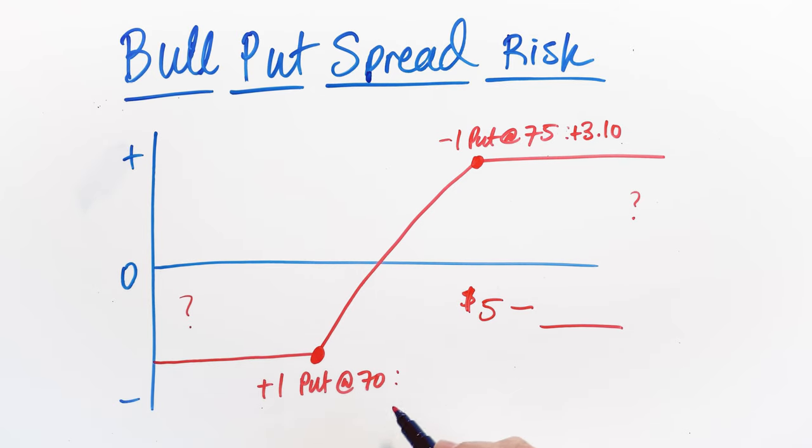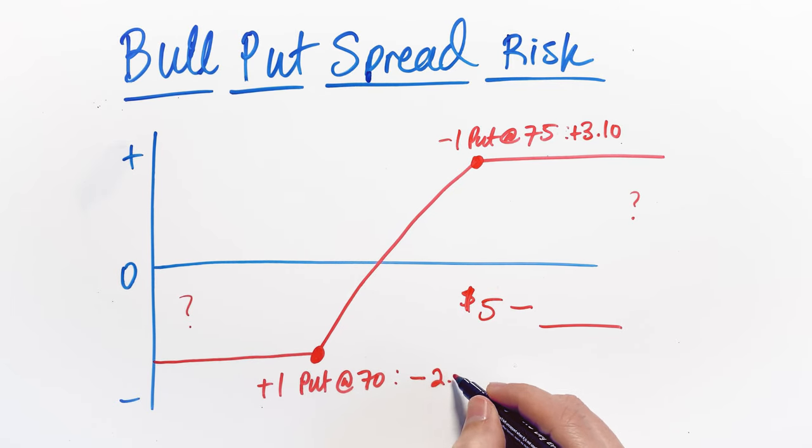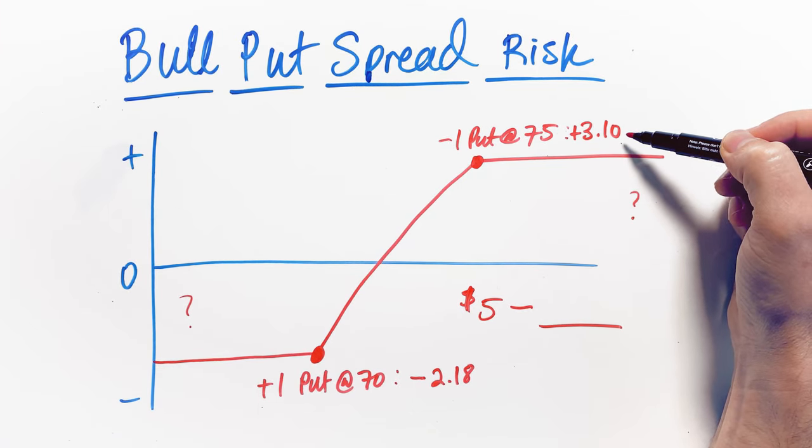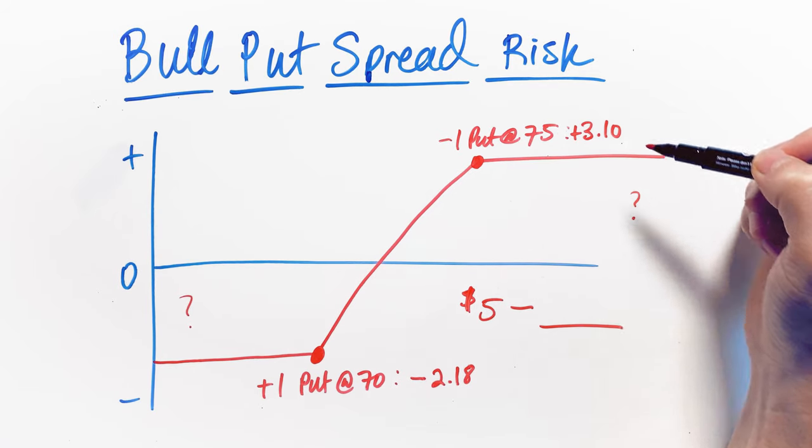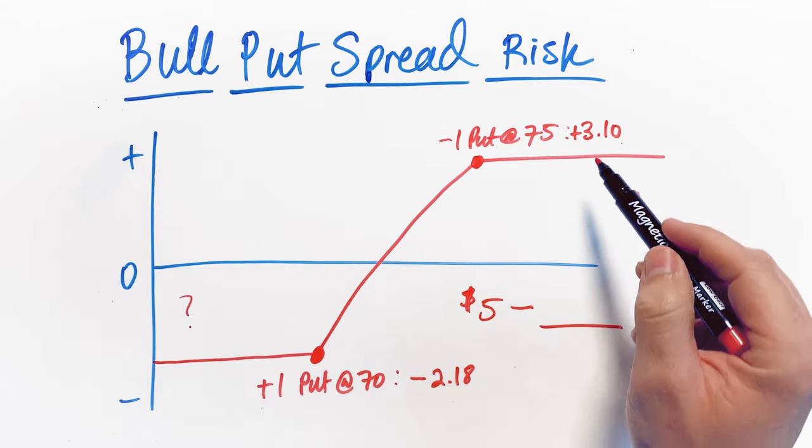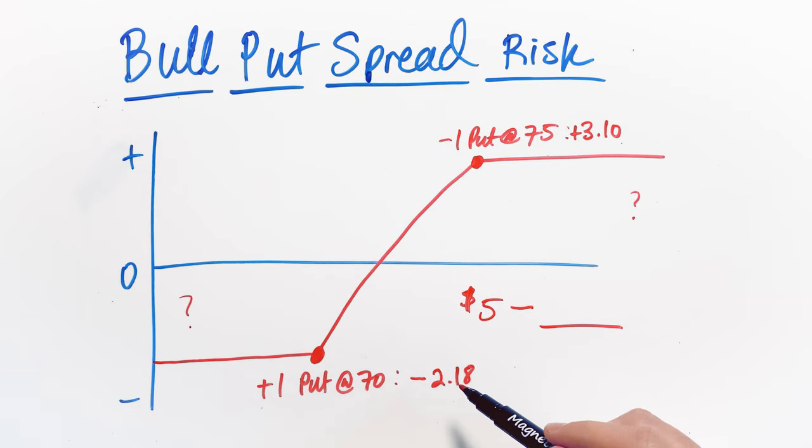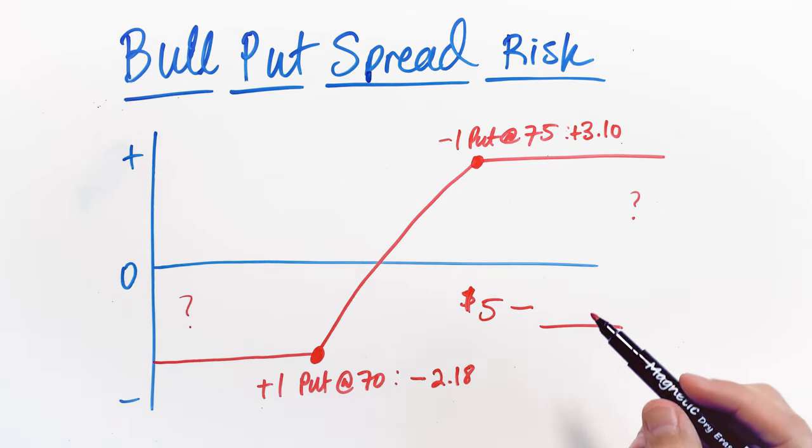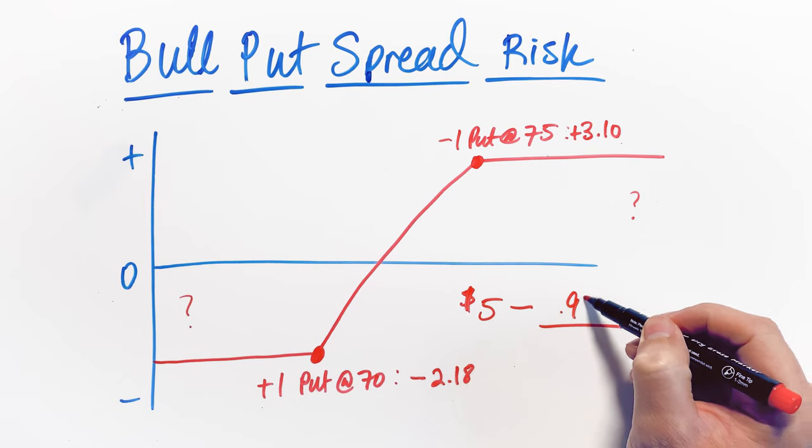On the put side, on the 70 strike, if we had bought this put option, so we are now long a put option, it would have cost us money and let's assume that it costs us $2.18 to buy that particular contract. Again, we sold the 75 strike put for $3.10. We used some of the proceeds to buy the 70 strike put for $2.18. The net difference between these two prices, the total credit that we collected on this particular position, was simply a $0.92 premium.